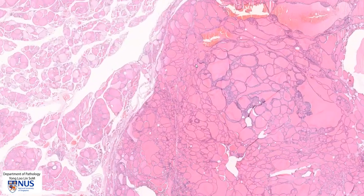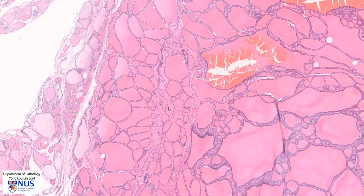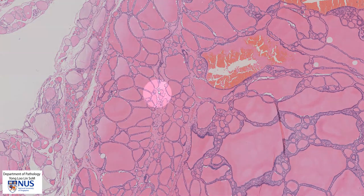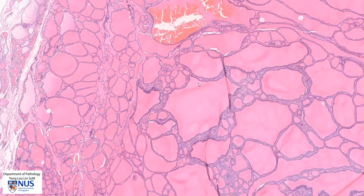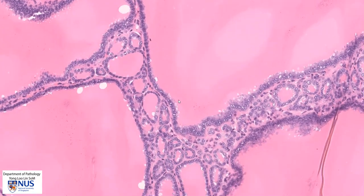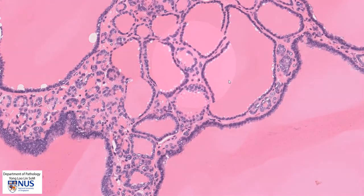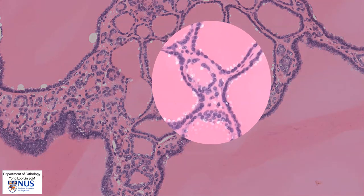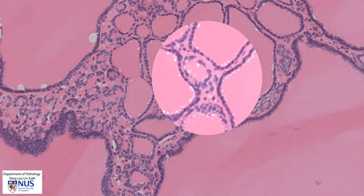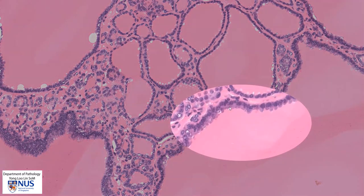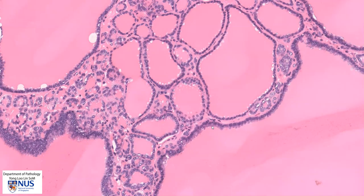These nodules are composed of follicles of varying sizes. We can see that they range from quite small to very large, and over here we have a very large follicle. Many of them contain abundant colloid. The lining cells of the follicles in most areas are quite flat and cuboidal, with very uniform rounded nuclei. In some areas the lining cells are a little bit more columnar and taller — these are the more hyperplastic areas.